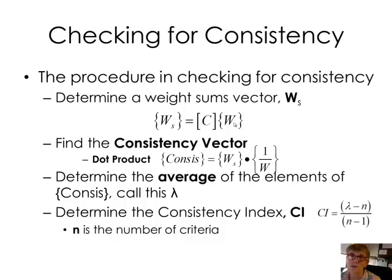And lots of talking here, but we'll take that W sub S and divide it through by the elements of the vector W, or another way to phrase that is we're going to take the dot product of W S and 1 over W to get this consistency vector.